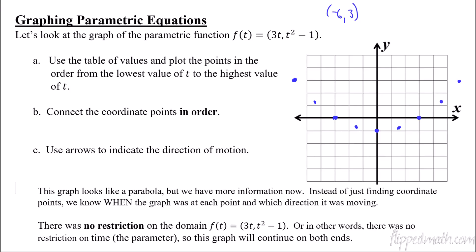Hopefully your graph looks something like this. If we connect the points you're going to see a parabola shape forming. Now I want to introduce something that comes up in the next lesson, 4.2, and that is direction. This graph has direction to it — it's not just a graph lying on the coordinate plane. I'm going to put tiny little arrows showing the starting point and that we're moving to the right at each of the coordinate points. That's a 4.2 topic, but it makes sense to introduce it here as you're putting the points in order.